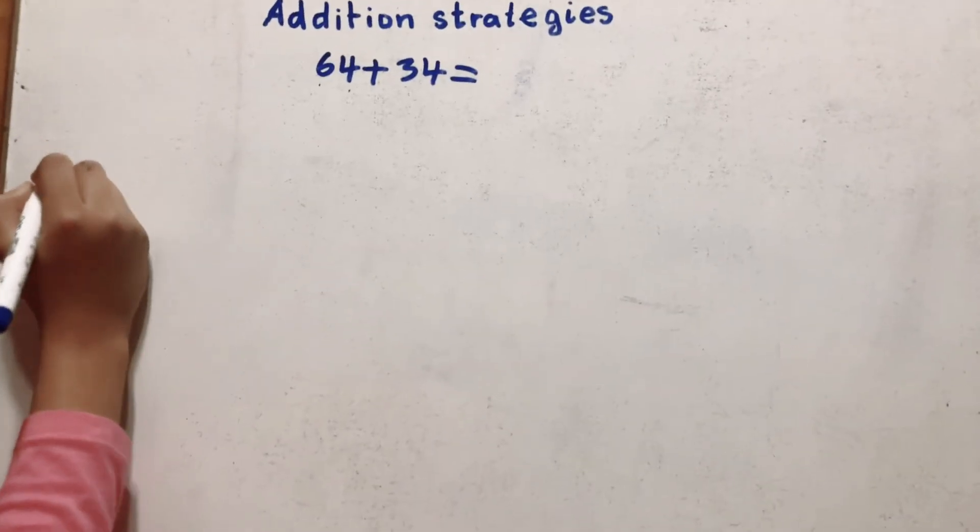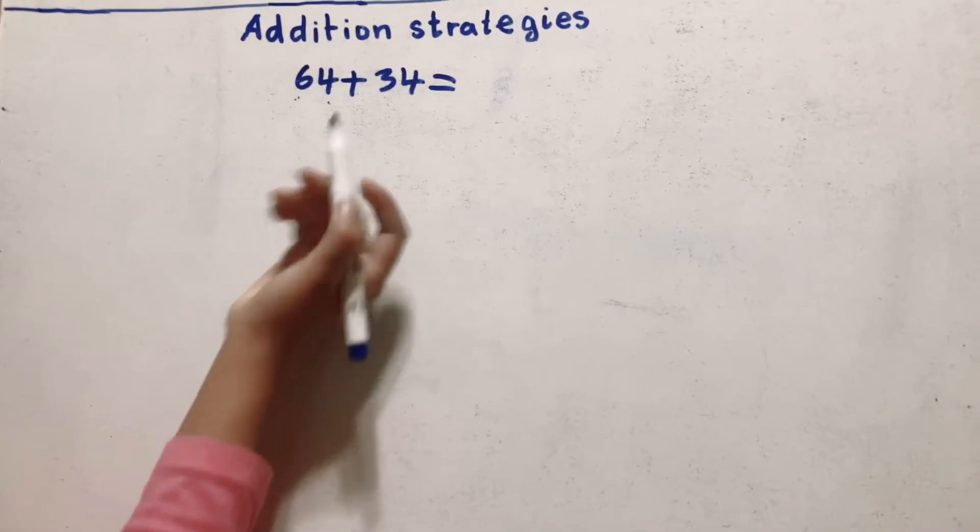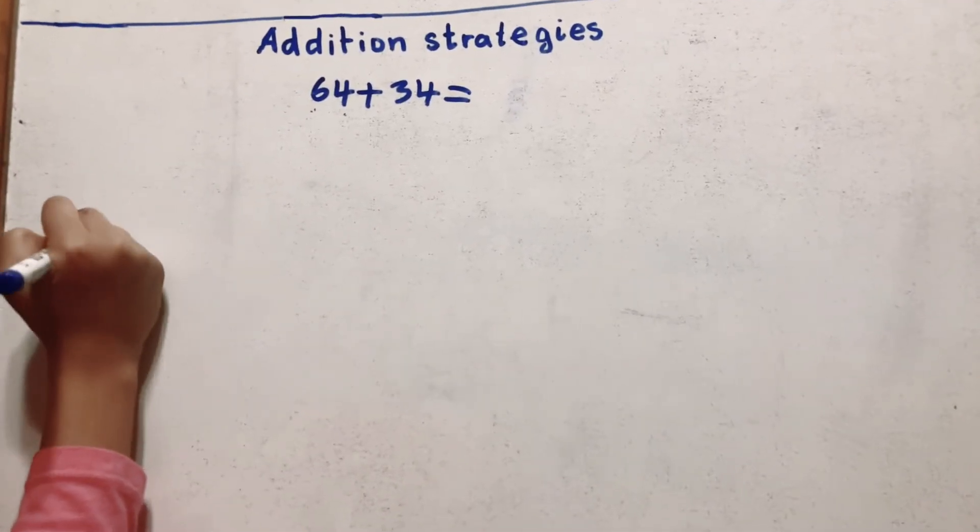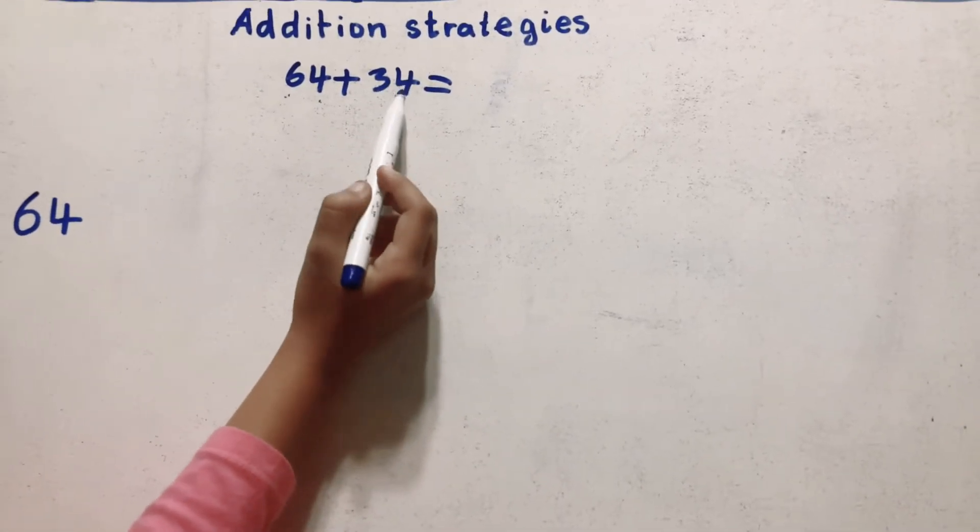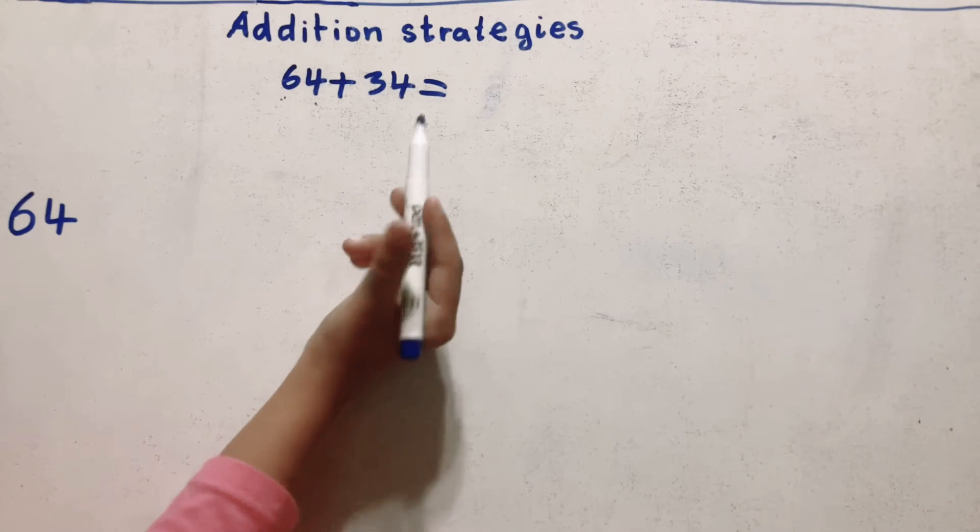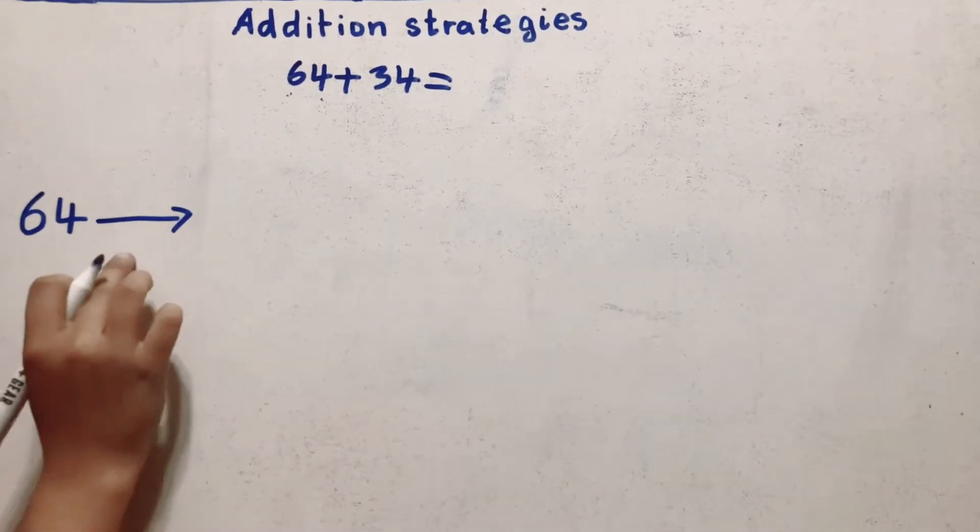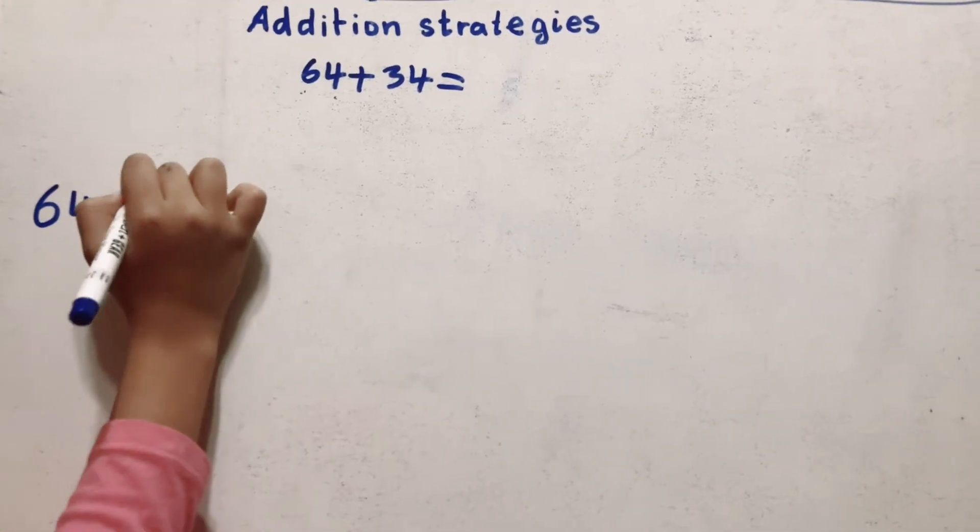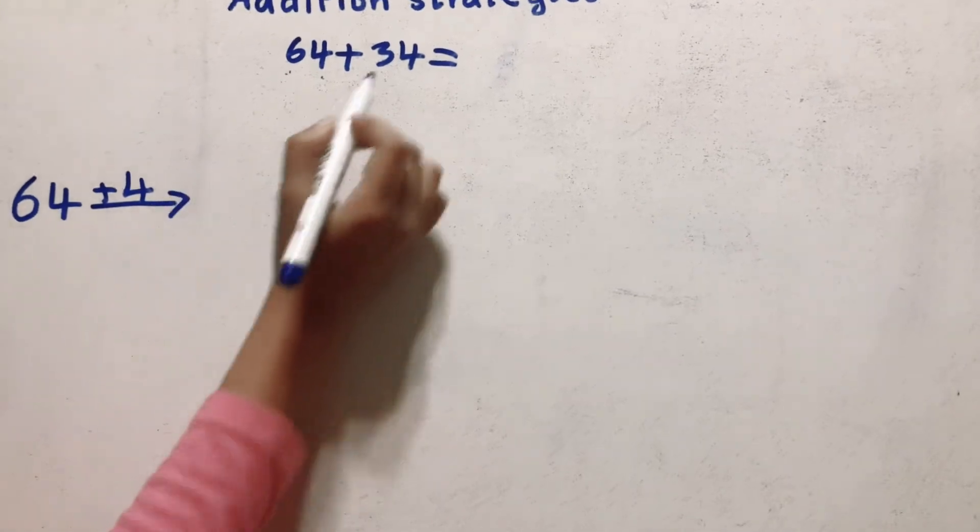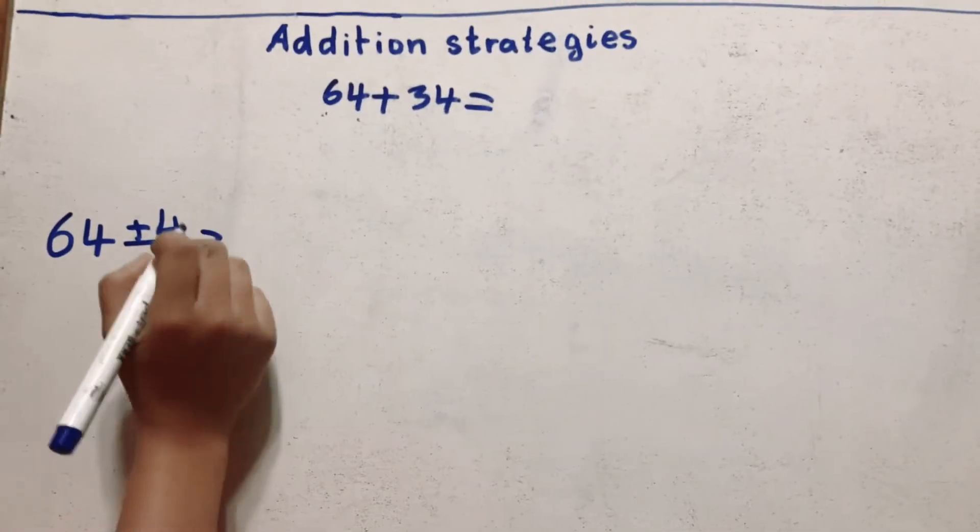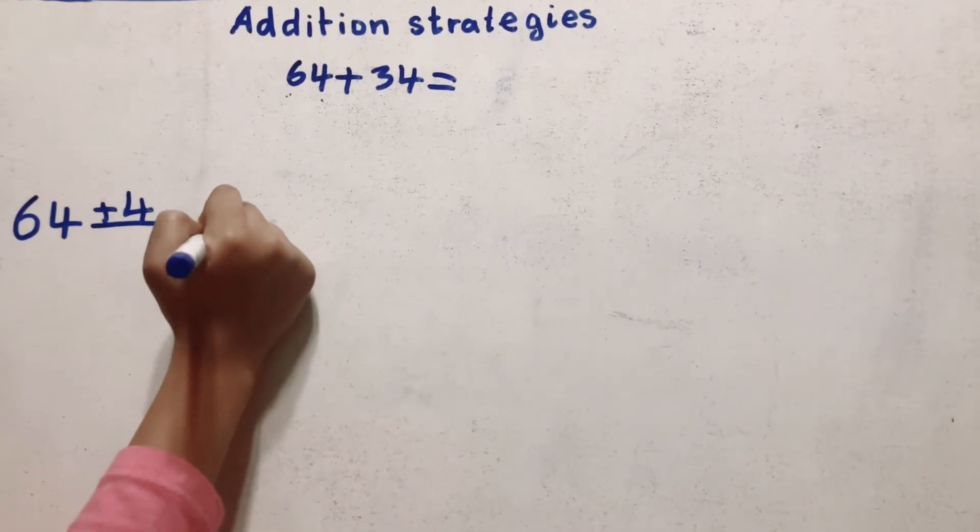So the first strategy is the arrow way. So this is how you do it. You're gonna take the 64 and put it over here. So 64. And then you're gonna take the four from the ones place of 34 and you're gonna write it on top of an arrow. So you're gonna draw an arrow and plus sign and you're gonna put the four over here. So now we're gonna add 64 plus 4 and that equals 68.